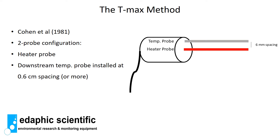The simplest method to measure heat pulse velocity in plant stems is called the tmax method. The method was developed by Cohen et al. back in 1981 and uses a two-probe configuration with a heater probe and a downstream temperature probe. In this example the spacing between the heater probe and temperature probe is six millimeters, though other spacings such as 10 or 15 millimeters are possible. Generally, six millimeters is the standard for this two-probe configuration.